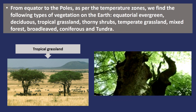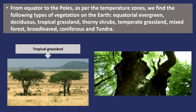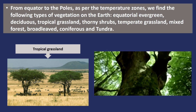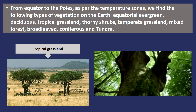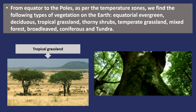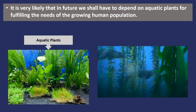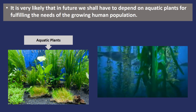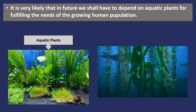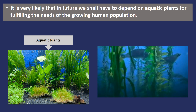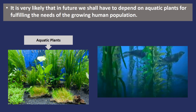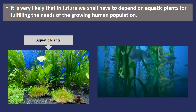We find numerous vegetation types on the surface of the earth. The vegetation is different at different places depending on the climate and soil. We find equatorial, evergreen, deciduous, tropical and mixed kinds of forests on earth. We are aware that plants and forests are decreasing day by day. The felling of trees for human habitation is a common practice. Hence, there is a possibility that in future, mankind will have to survive on aquatic plants to curb the growing population.